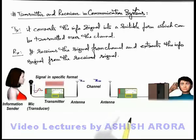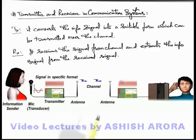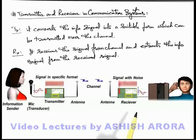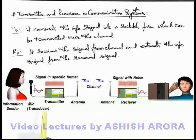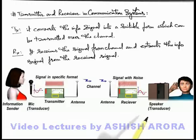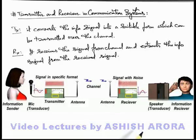From the channel, the information received is in the similar form in which it was submitted by the transmitter, and it contains some noise which was caught by the transmission channel. Finally, it is received by the receiver, and the receiver extracts the electrical signal which was fed to the transmitter initially. The receiver then feeds this extracted signal into a transducer, which is here a speaker, and the speaker gives the final information in the form of a voice signal to the information receiver.